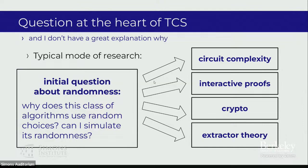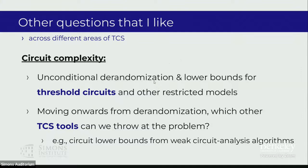A couple of other questions I like thinking about. In circuit complexity, unconditional derandomization and lower bounds for threshold circuits is something I've been working on in recent years. More generally, moving onwards with new approaches for circuit complexity — we know that math and combinatorics aren't enough. Ryan gave us new tools: the algorithmic method, so we can bring in derandomization, algorithm design, and interactive proofs. Which other tools from theory can we throw at the problem of circuit complexity, and how can we relax the algorithms in Ryan's approach to still get circuit lower bounds?